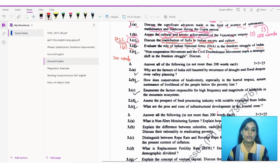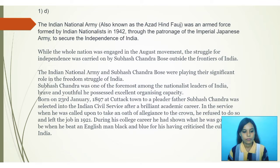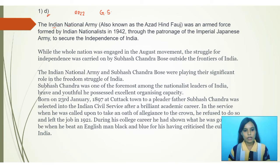I'm not going to provide you with all the sentences to write; rather I'll tell you what points you can include — just write a 200-word answer incorporating these points. The Indian National Army, also known as the Azad Hind Fauj, was an armed force formed by Indian nationalists in 1942 through the patronage of the Imperial Japanese Army to secure the independence of India.